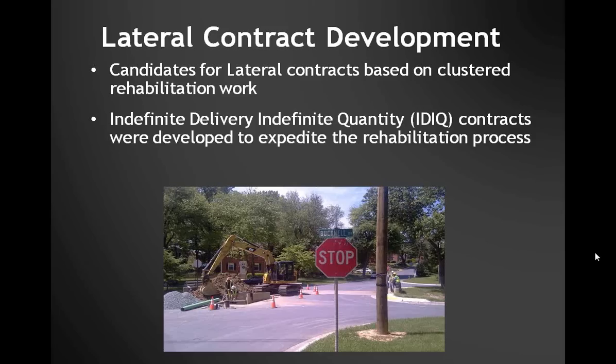We try to assemble candidates for lateral contracts based on clustered rehab work, taking action where rehab efforts were already underway. The ultimate goal is to rehabilitate one area at a time to limit construction disturbance. We've seen instances where a single house connection was excavated and not completed until the rehab contract came through the following year, leaving residents dealing with work on their street for over a year. We developed indefinite delivery, indefinite quantity contracts to keep work flowing — essentially a master contract with task orders generated within.